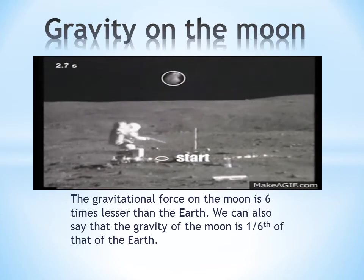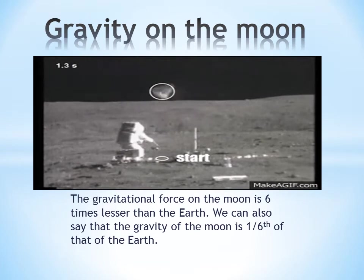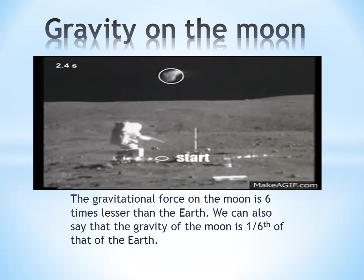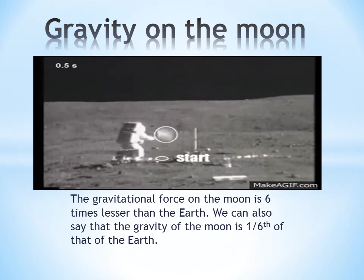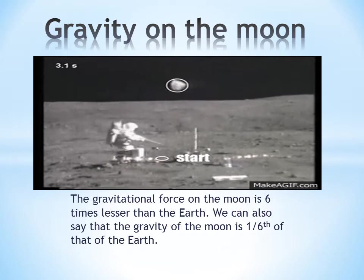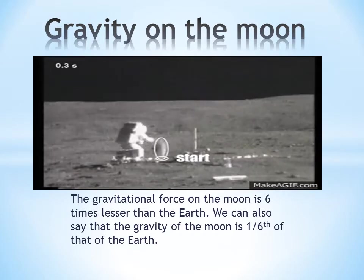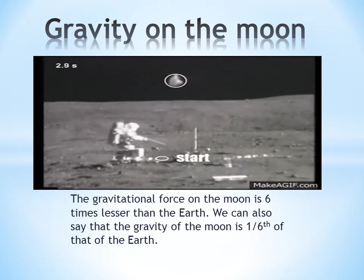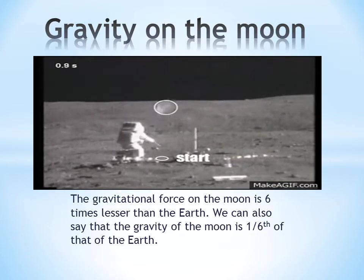The astronaut threw something in the upwards direction and it came down in about four seconds. This is the moon. So looking at this, the question in your mind is: why did this piece of rock come back down? Shouldn't it be floating if there is no gravity? And how come the astronaut is standing on the moon? Shouldn't he be floating and just keep on floating?